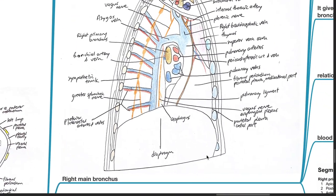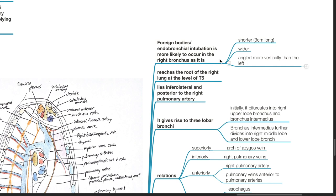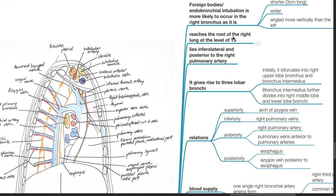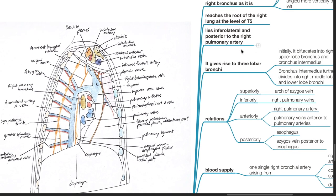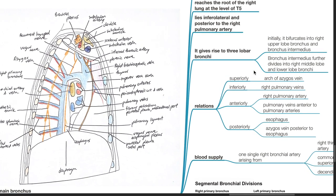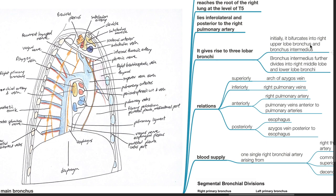Right main bronchus. Foreign bodies or endobronchial intubation are more likely to occur in the right bronchus as it is shorter, wider, and angled more vertically than the left. It reaches the root of the right lung at the level of T5 and lies inferior, lateral, and posterior to the right pulmonary artery. It gives rise to three lobar bronchi; initially bifurcating into the right upper lobe bronchus and bronchus intermedius, which further divides into right middle lobe and lower lobe bronchi.